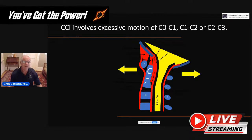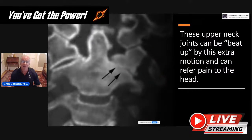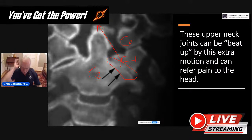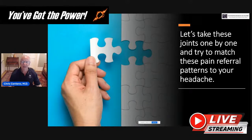Now, these are much more common causes of headaches in people with neck pain, including CCI: occipital neuralgia — some of you may have had occipital nerve blocks that gave some short-term relief — the upper neck facet joints, which we've known for decades are common causes of headache in patients with chronic neck pain including CCI patients, and things like the rectus capitis posterior minor. CCI involves excessive motion of the upper neck — C0-C1, C1-C2, C2-C3 — and these upper neck joints can become beat up by this extra motion, getting osteoarthritis or injury.